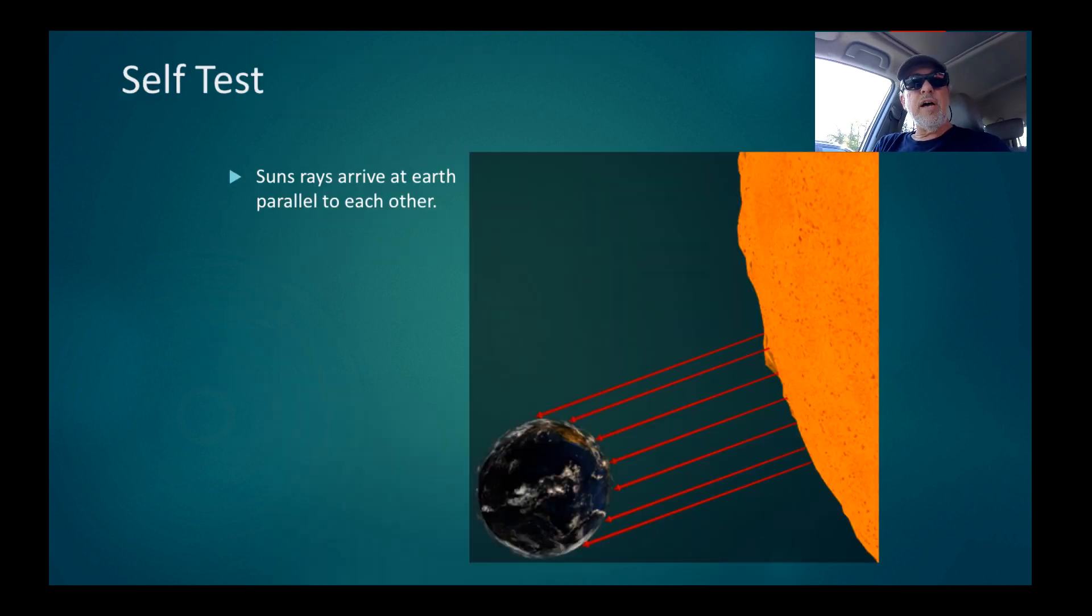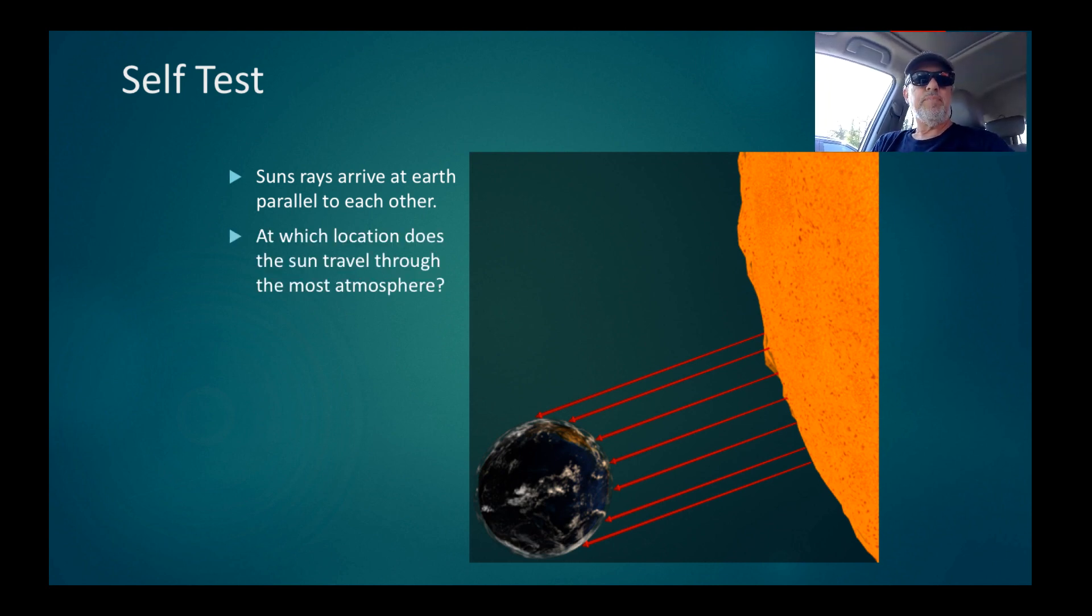Here's a self-test. The sun's rays arrive at the Earth essentially parallel to each other as shown in this diagram. At which location does the sun travel through the most atmosphere? Is it at the equator, or is it at the poles, or somewhere in between? If you chose at the poles that it travels through more atmosphere, then pat yourself on the back. You win a great big cupid doll.